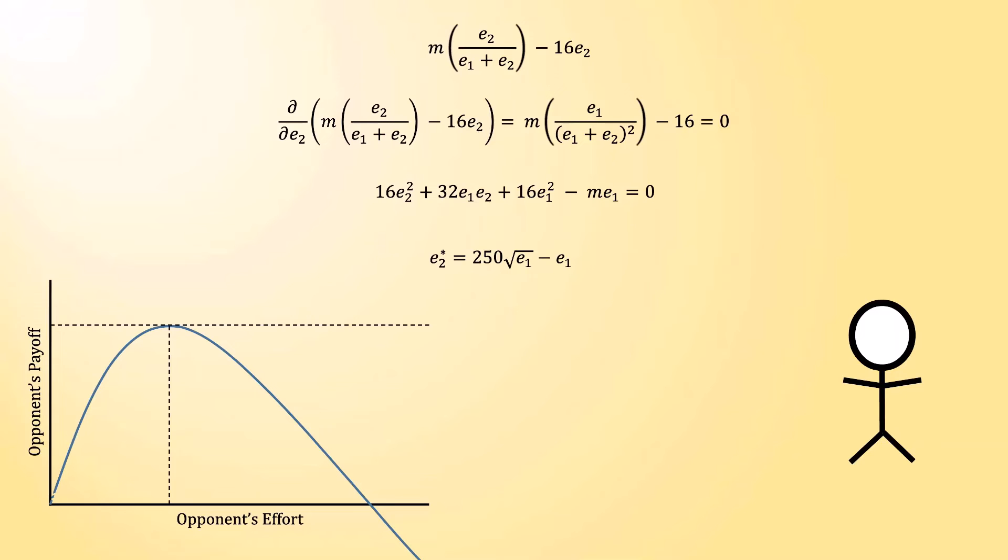Now that we've done that, we can solve for your optimal effort. Your payoff function looks like this. You win a million dollars with probability e1 divided by e1 plus e2. And then you pay 9 times e1 in terms of effort.